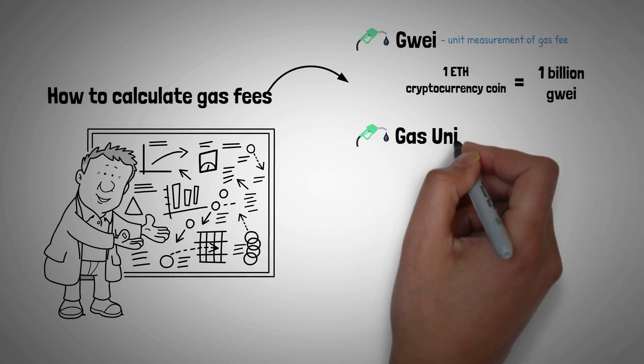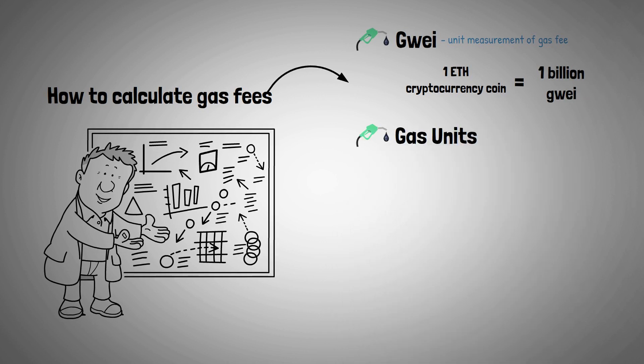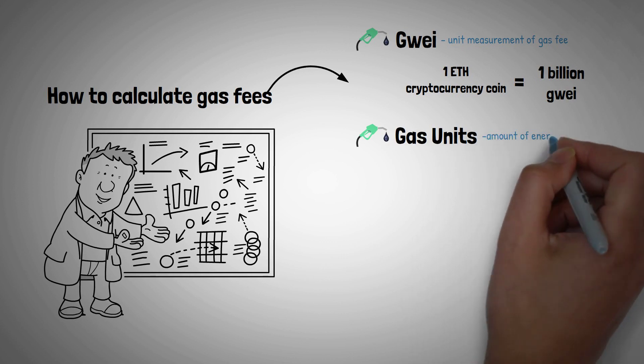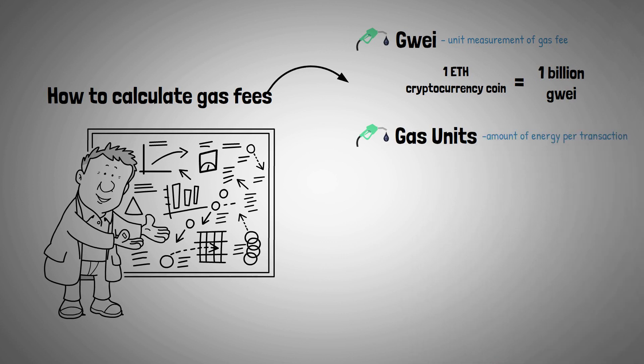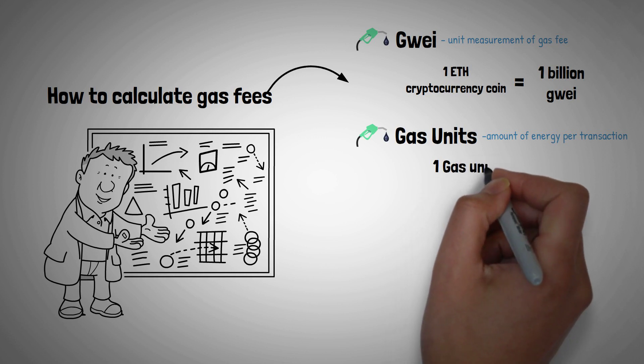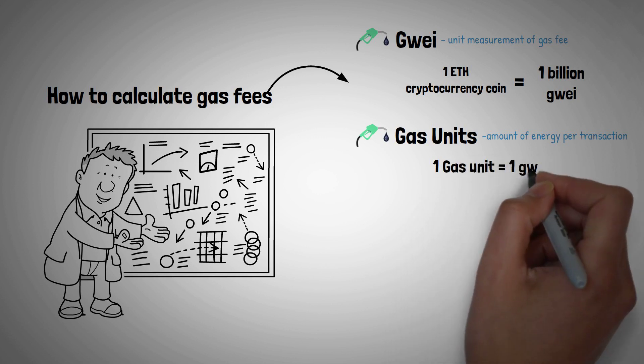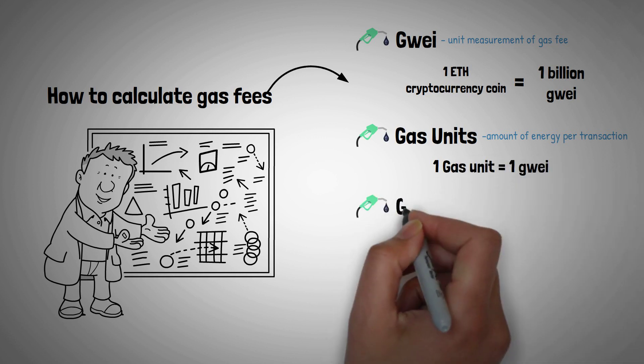Next, gas units: the amount of energy, or computational power, that is consumed for each transaction. Each gas unit represents one Gwei. It's like the amount of fuel consumed by a bus.